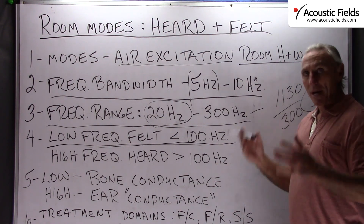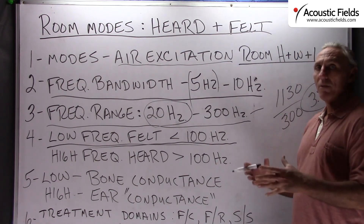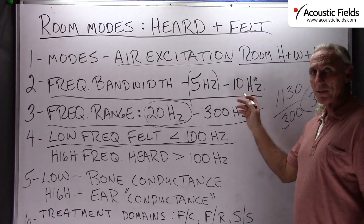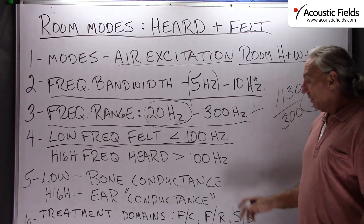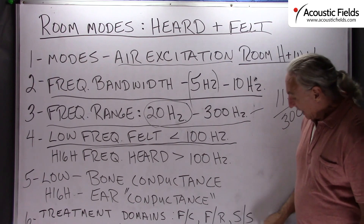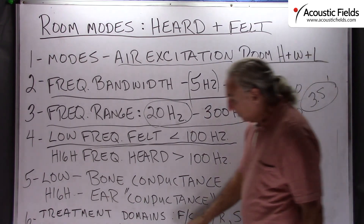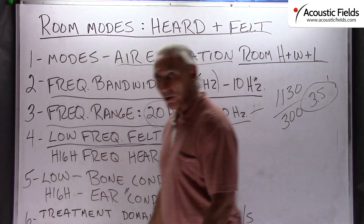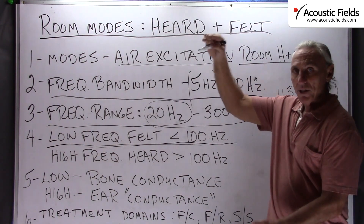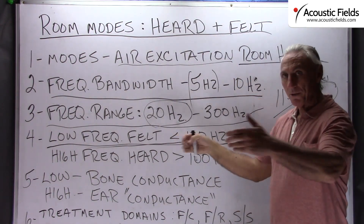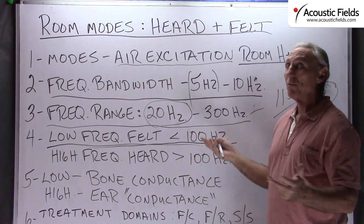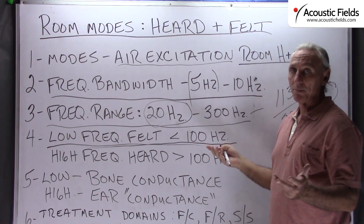Room modes are air moving in a particular space, defined by a particular bandwidth — both felt and heard. We have to realize where it occurs. There are three axes in our room: ceiling to floor, side wall to side wall, and front wall to rear wall — essentially three sound fields.